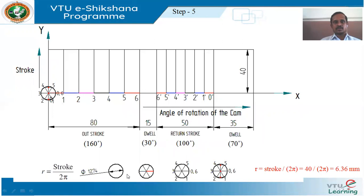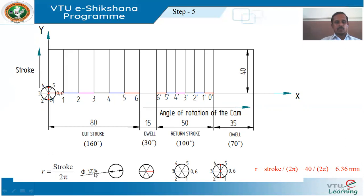Step 5 is very important under cycloidal motion. In order to find the proper path of the displacement of the follower, we need to generate a circle. The mathematical equation to find the radius of the generating circle is r = stroke / (2π). Here, r = 40 / (2π) = 6.36 mm. So 6.36 mm represents the radius of the generating circle, and the diameter is 12.74 mm. Use proper tools to draw a circle of radius 6.36 mm (diameter 12.74 mm).